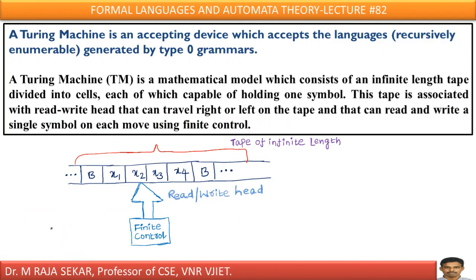Depending on situation, it can move either right side or even it can move on left side. That's what it says. It can travel right or left on the tape and can read and write single symbol on each move. That's what it says. Read-write head means it is useful for reading as well as writing. Here, finite control means what? Finite control means I can state from one state to another, Q1 to Q2, Q2 to Q3.